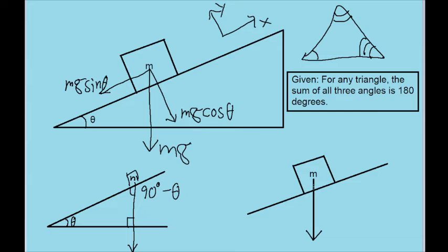Now I'm going to focus on the mass and the components of gravity acting on it. There's going to be one component this way, the x component using the tilted axis, and there's going to be another component along the surface of the wedge. Now, as we established a moment ago, this angle right here is 90 degrees minus theta.